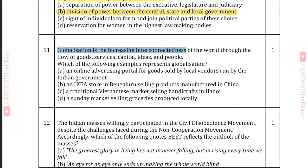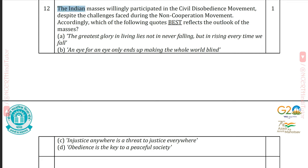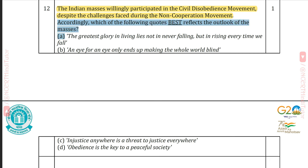Question 11: Globalization is the increasing interconnectedness of the world through the flow of goods, services, capital, ideas and people. Which of the following examples represents globalization? Answer D: An IKEA store in Bengaluru selling products manufactured in China. Question 12: The Indian masses willingly participated in the civil disobedience movement despite the challenges faced during the non-cooperation movement. Which quote best reflects the outlook of the masses? Answer A: The greatest glory in living lies not in never falling, but in rising every time we fall.